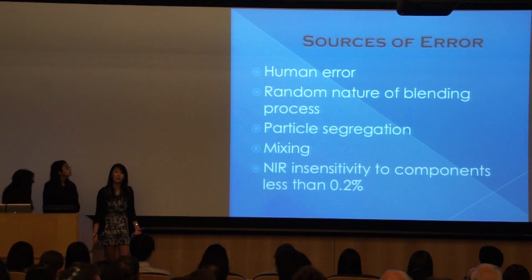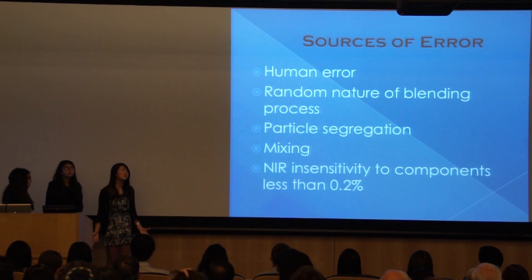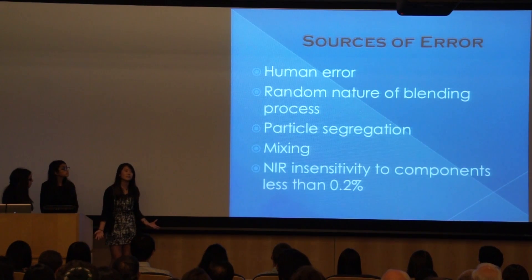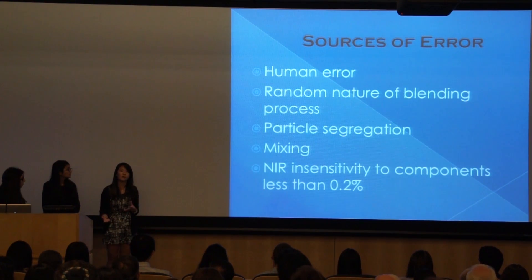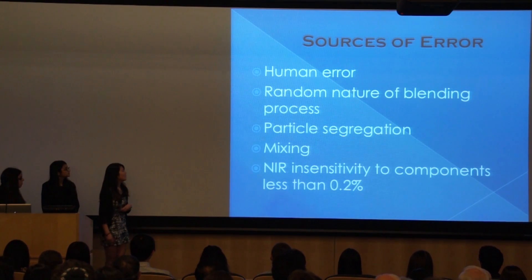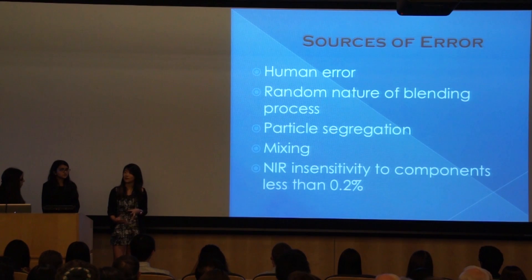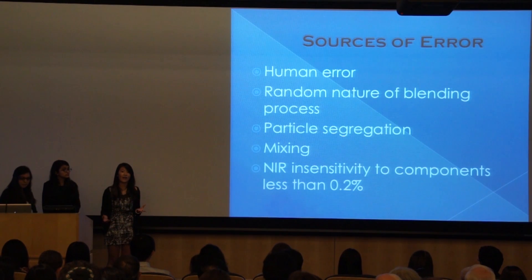While we tried to eliminate as many errors as we could, some were inevitable, such as human error in measuring, sampling, or reading the data. Furthermore, the very nature of blending is random — as powders rotate through the V-blender or double cone blender, there will always be some particle segregation where heavier particles fall to the bottom and lighter particles disperse at the top. Even after mixing, particle segregation can still occur based on particle density and size as samples sit in the glass vial. Additionally, because we worked on a smaller scale, some samples were very small, with components less than 0.2% of the actual sample, making it difficult for the NIR to get an accurate read.